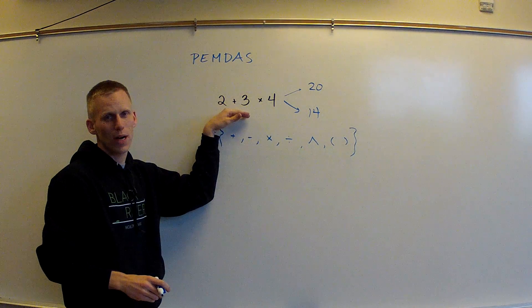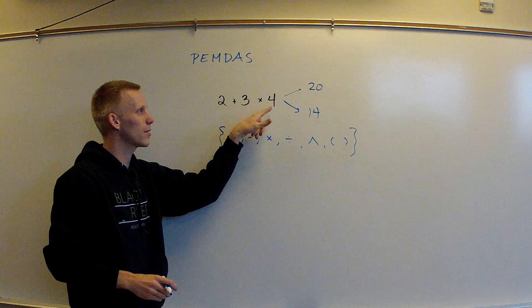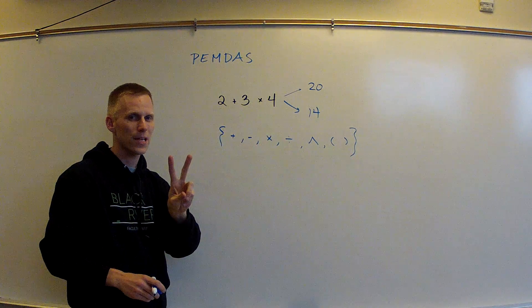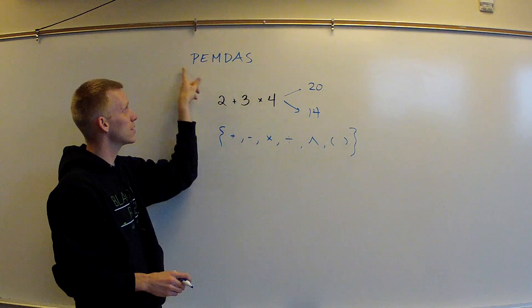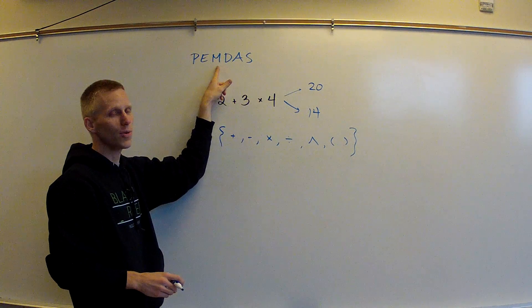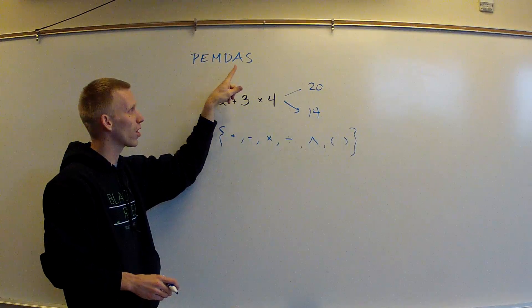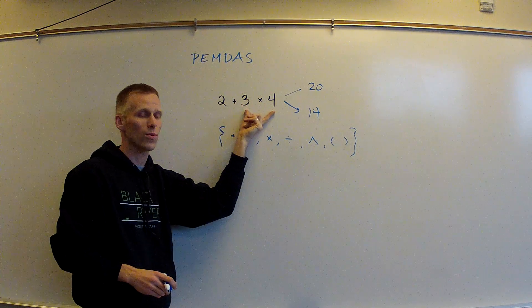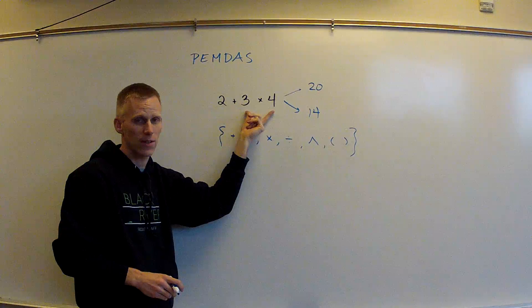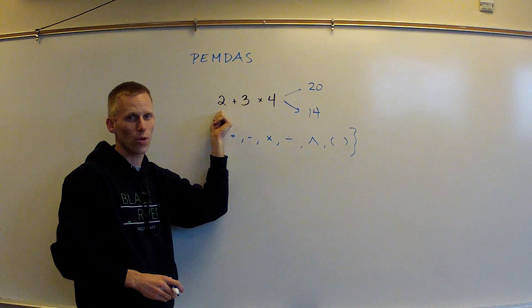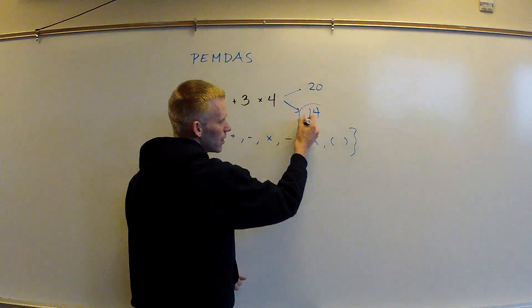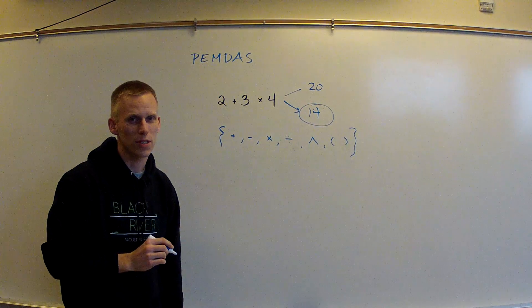So if I look at this problem, two plus three times four, I notice two operations, addition and multiplication. According to these mathematicians, multiplication must come before addition. Therefore, we have to do three times four first, giving us 12, that 12 plus two, giving us 14. The 14 is the only correct solution to this problem.